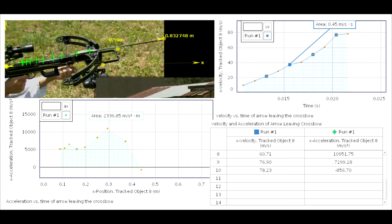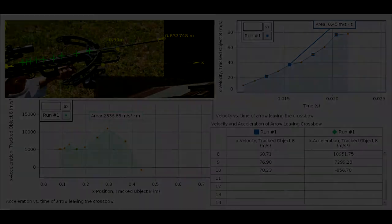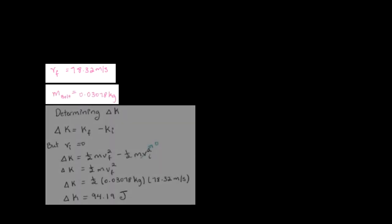The area under the acceleration versus position graph represents the work done on the bolt by the string of the crossbow. Using the initial velocity of 0 meters per second and final velocity of 78.32 meters per second, and a bolt mass of 30.78 grams, the work done on the system was calculated to be 94.19 joules.